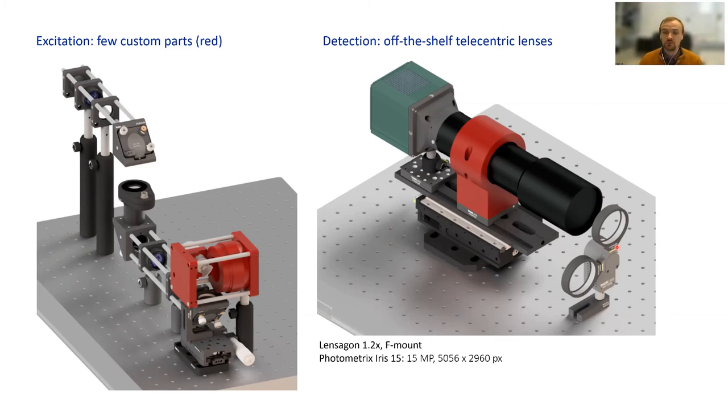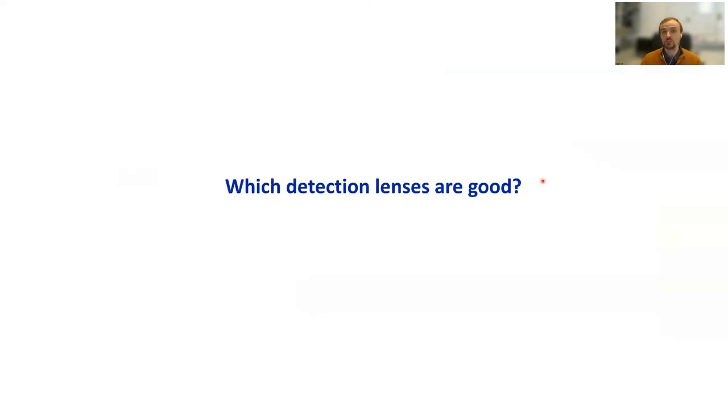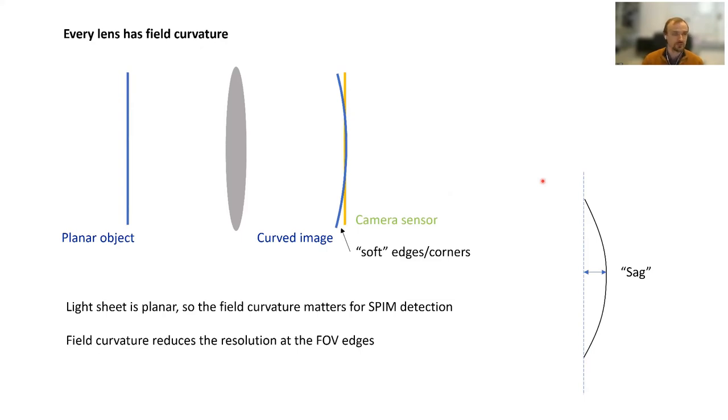Now the big question when we start switching the detection optics: which detection lenses are good? How can we make informed decisions about good or bad choices of the detection lenses? One characteristic of every lens is that it has field curvature. If you have a planar object, when it is focused, the image is always curved. This is true even for very high-end objectives and lenses. For light sheet microscopy this is especially important because our excitation plane is planar, so we want a planar image on the camera sensor. If it is curved, we will lose resolution at the image corners.